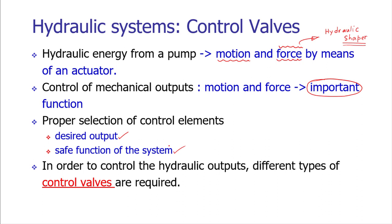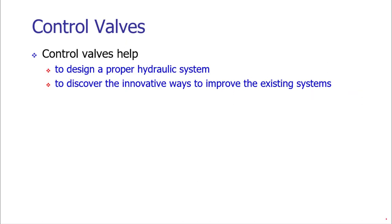Hydraulic valves are needed to control the flow of hydraulic fluid inside the system, to maintain the required pressure of the hydraulic fluid — since fluid pressure itself generates the required force — and to control the direction of application. There are different types of functions carried out by control valves, and various types are used in industry. Control valves help us design a proper hydraulic system where all elements work together to generate the output in the desired manner.